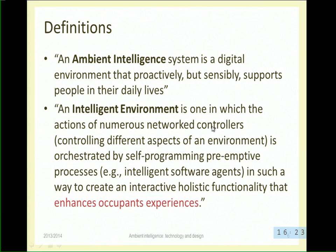The definition specifies you need some distributed hardware - sensors, controllers, actuators - and you need a lot of software: self-programming, pre-emptive processes, software agents - intelligent software to take all this information and turn it into something useful for the occupants. This is what we want to do. It's not just automation - automating stuff that would be easy, just reacting to commands. We want to try to do something more. Today if you go to a shop and ask for your home to be intelligent, there is no solution. They will sell you something, but it won't be intelligent in the sense of these definitions.